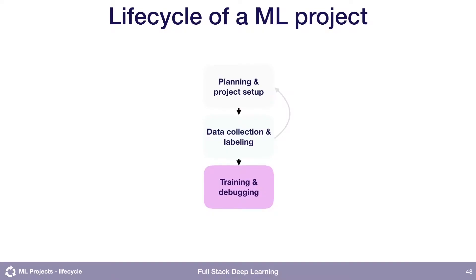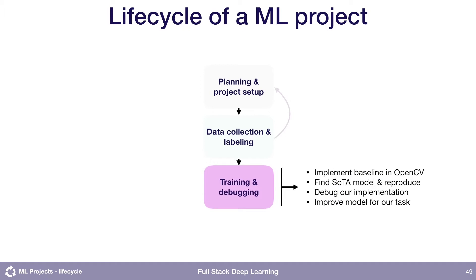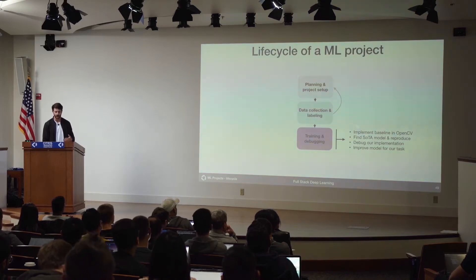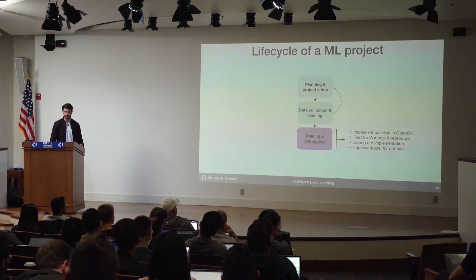Once you have some data that you've collected and labeled, you move into the training and debugging phase. This has activities like starting with just a linear regression as a baseline, or some baseline in OpenCV. Then we might do a literature review and ask what is the state of the art in pose estimation, implement those models, reproduce and debug them, and see how well they perform on our task. Then we go through a process of continually improving our model until we think we're hitting the requirements.